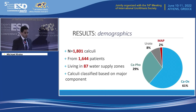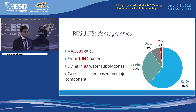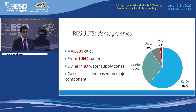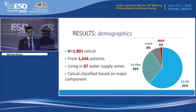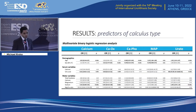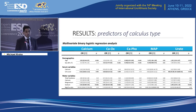Moving on to the results. In total, 1,801 calculi from 1,644 patients were included in our study. These patients received tap water from 87 distinct water supply zones. We classified calculi based on the predominant calculus component — the pie chart here shows the proportional distribution of the calculi in our study. We then looked to see if any water variable could predict any particular type of calculus over others using univariate and multivariate binary logistic regression analysis.